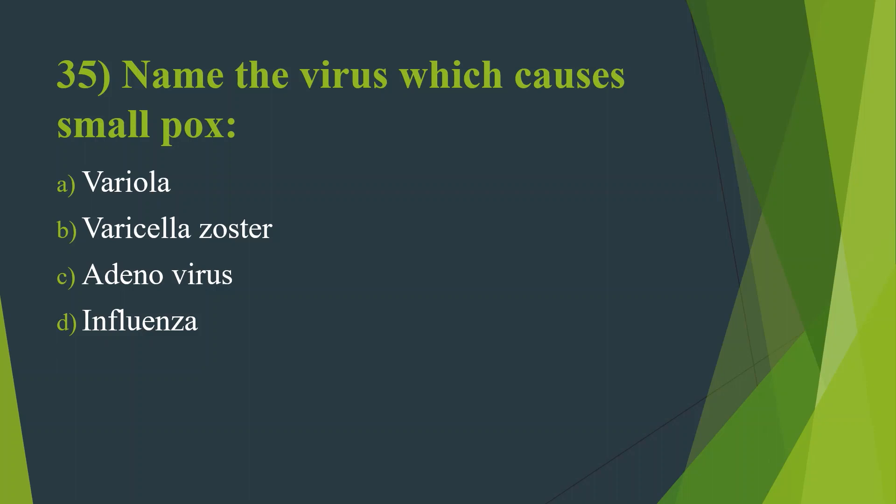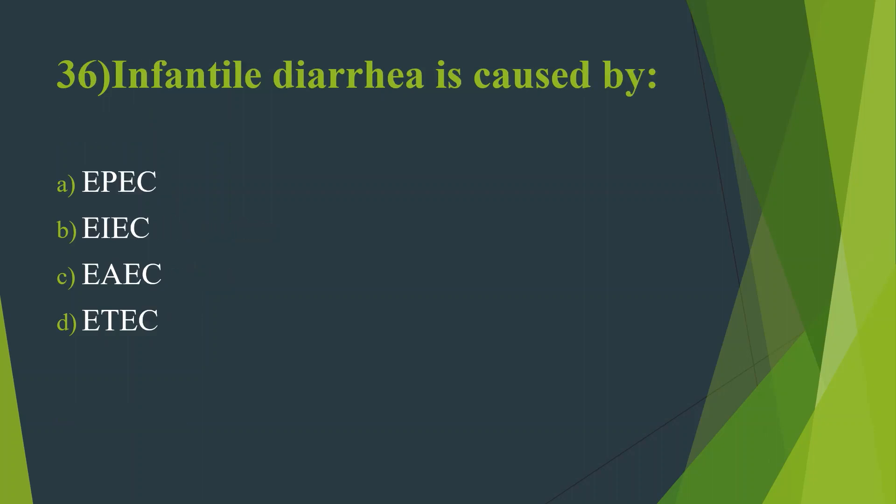Thirty-fifth question: Name the virus which causes smallpox. Option A, Variola. Option B, Varicella zoster. Option C, Adenovirus. Option D, Influenza. Answer is Option A, Variola.